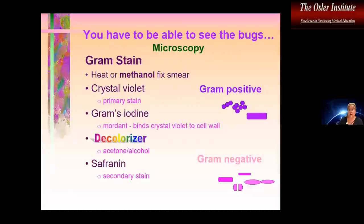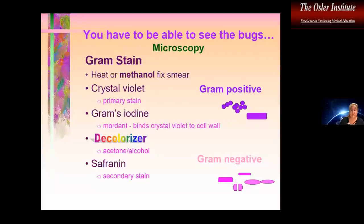Once we've collected the bugs and have a specimen, we have to be able to see them. The mainstay of microbiology is the gram stain — we use it for direct specimens and to discuss all of bacteriology today, since organisms are broken down by their gram reaction. Methanol fixation is better than heat fixation because it preserves both bacteria and host cells. Crystal violet is the primary stain with Gram's iodine as the mordant, and the decolorizer — equal amounts of acetone alcohol — is probably the most important part of the process.